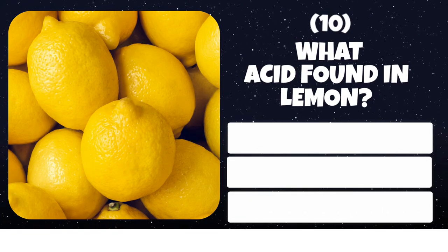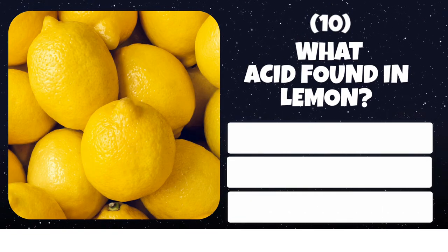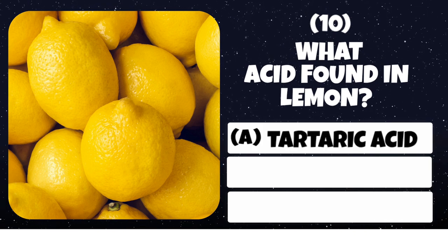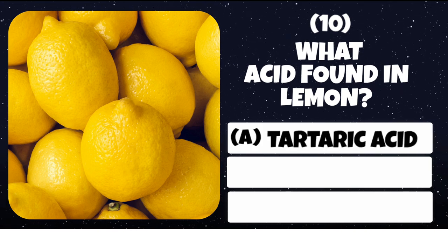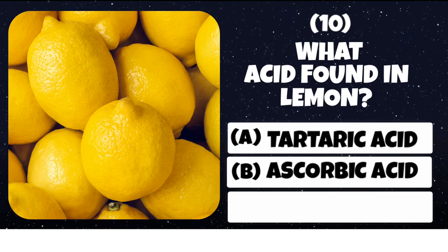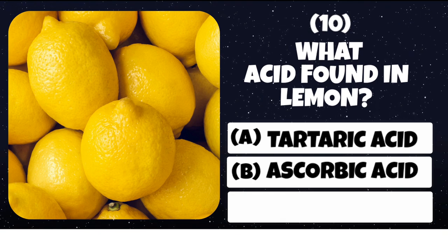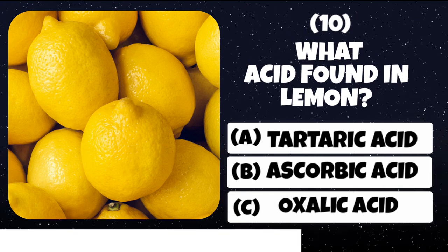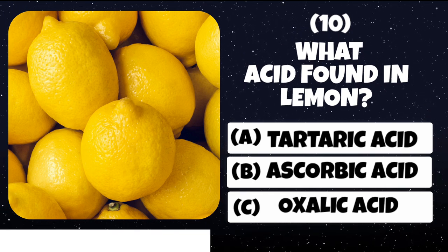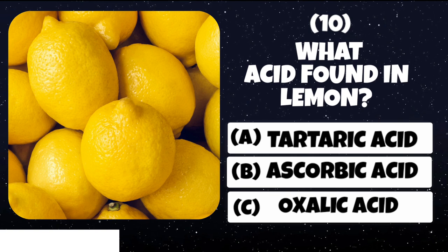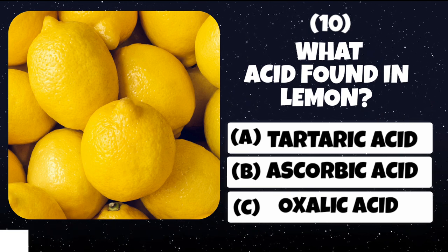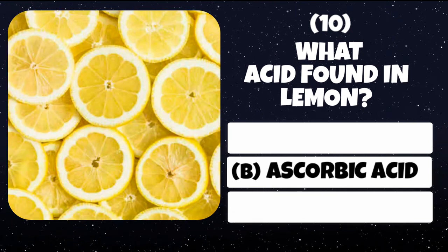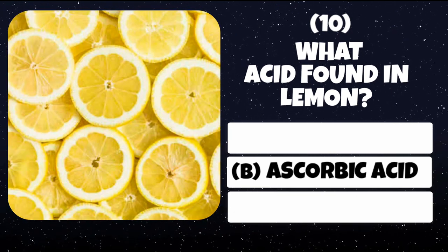Question number 10. What acid is found in lemon? Option A: Tartaric acid. Option B: Ascorbic acid. Option C: Oxalic acid. Correct answer is Ascorbic acid.